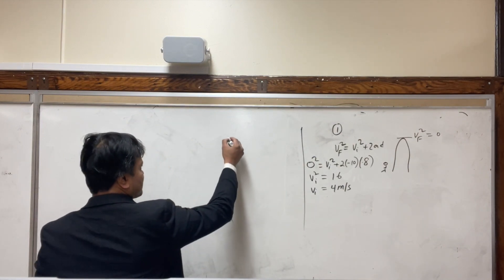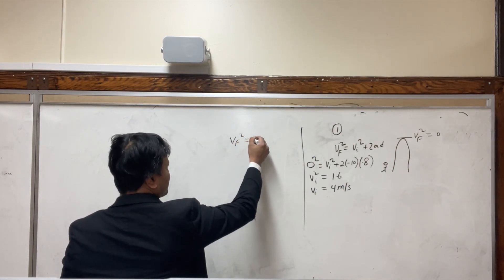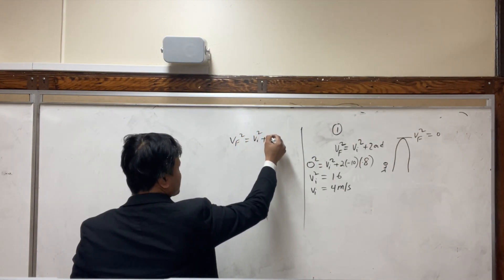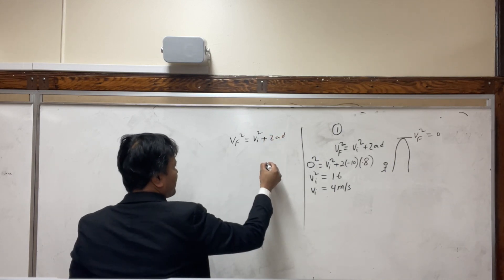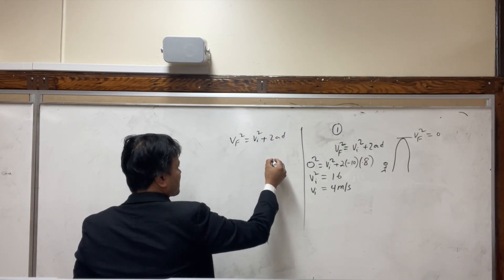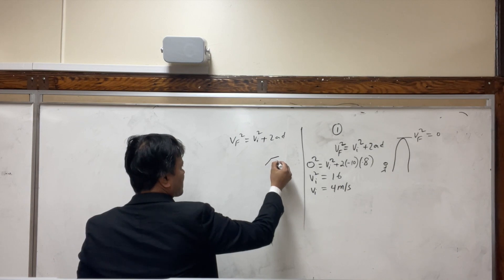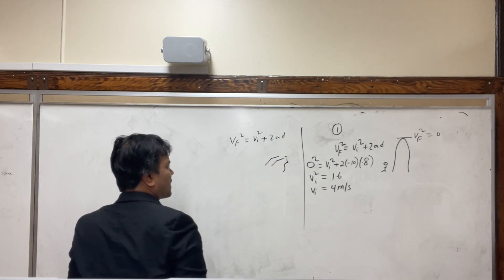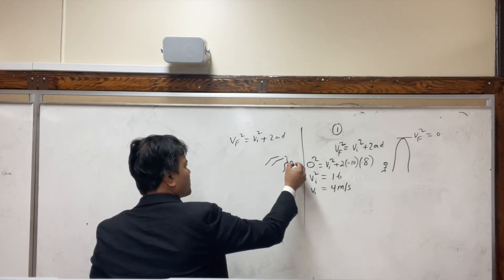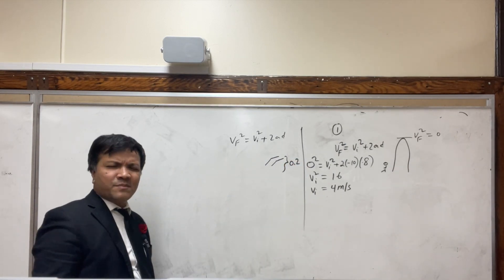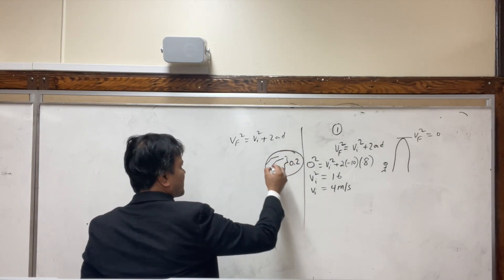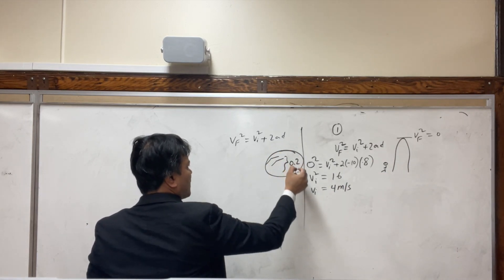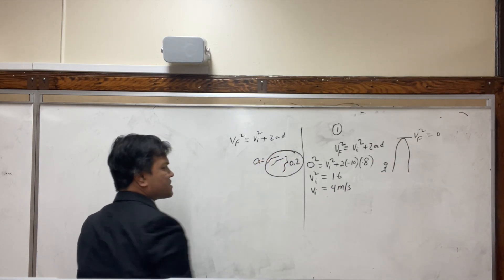Let's find the acceleration. V_f squared is equal to V_i squared plus 2aD. What happened when I crouched my knee for 0.2 meters? That means I accelerate for that long distance.